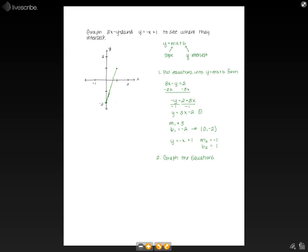So our first line looks like this. You might want to use a straight edge to do this, because we're going to have to estimate where these lines intersect, so it's important that they're straight. So this is 3x minus y equals 2.